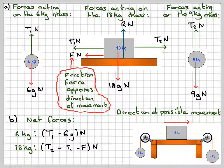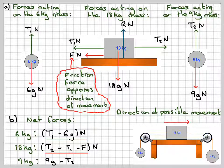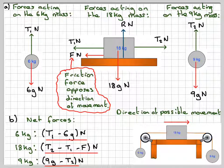And then in the case of the 9 kilogram mass, it's going to be 9G minus T2 Newtons.